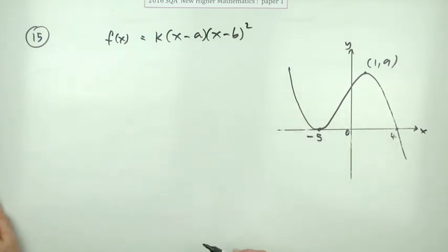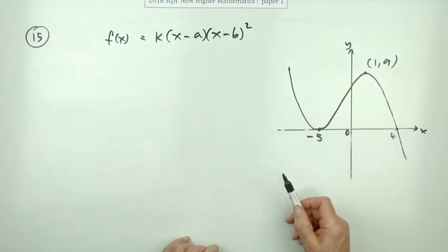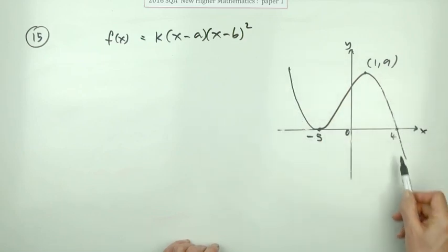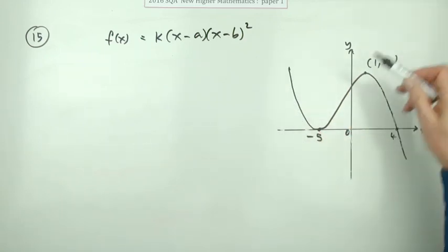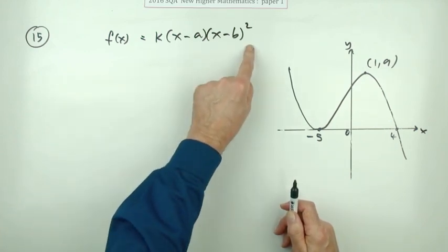Straight away from this you can see that k is going to be negative because it's an upside down cubic. A cubic should rise up like this, and since it's already factorized, that expression will equal zero when those brackets are zero.